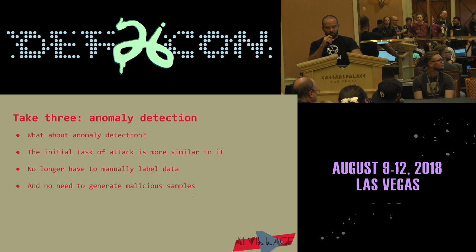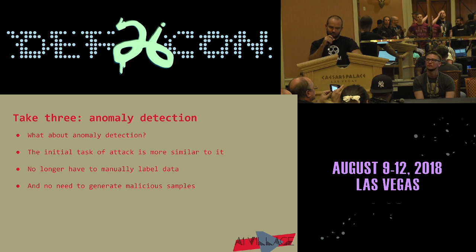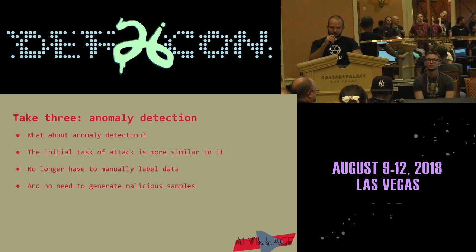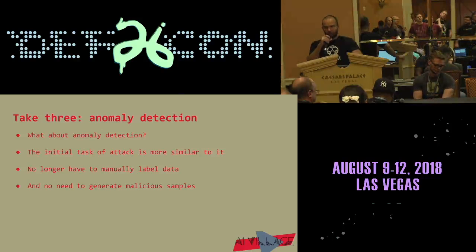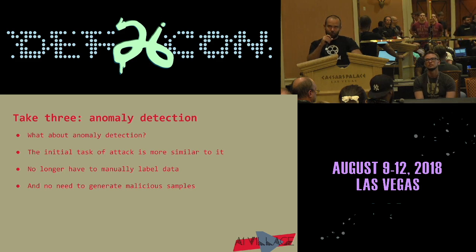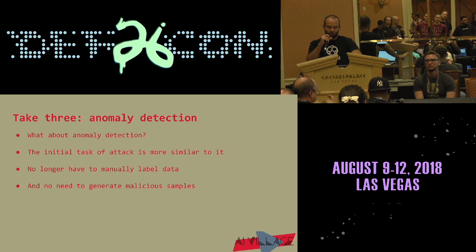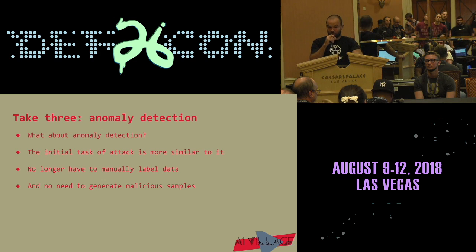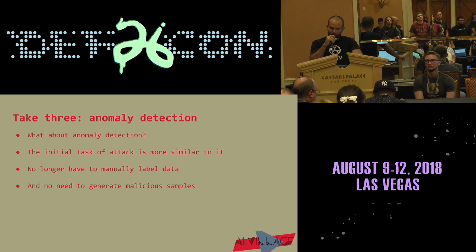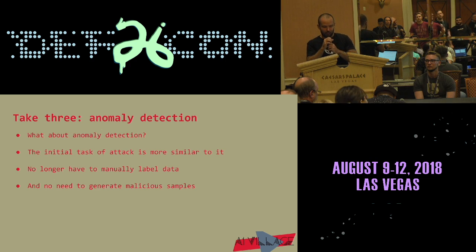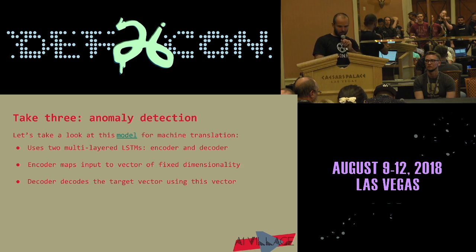What if we tried to detect anomalies instead of classifying data into SQL injections, XSS attacks, and so on? The initial task of attack detection is more similar to anomaly detection. If you try to detect an anomalous attack, you would first detect something weird about the request, and only then understand it's an SQL attack. The advantage is that if we build a reasonable anomaly detection platform, we would no longer need to manually label data or generate malicious samples.